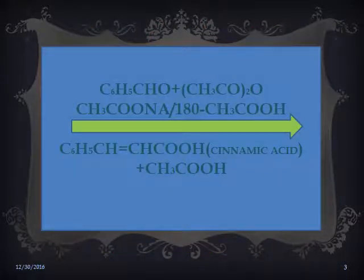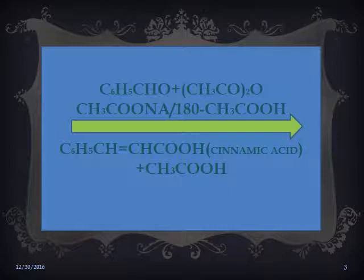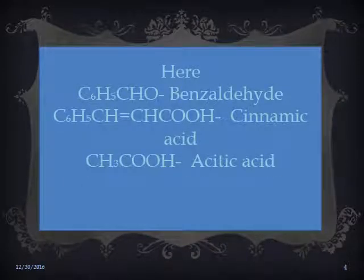The reaction for the general method of preparing Cinnamic Acid: C₆H₅CHO (benzaldehyde) plus CH₃CO₂O (acetic anhydride), in the presence of CH₃COONa (sodium acetate) at 180°C, gives Cinnamic Acid — C₆H₅CH=CHCOOH — along with CH₃COOH (acetic acid) as a byproduct.